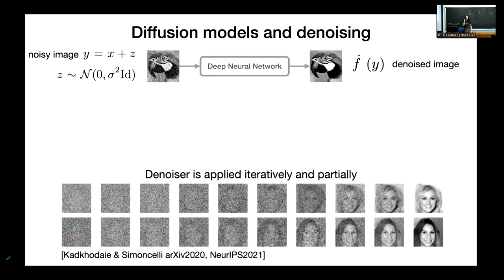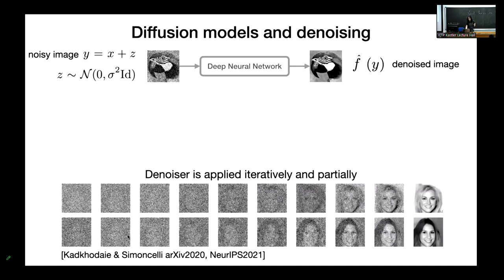I'm going to give you a brief review of diffusion models from a denoiser perspective. Diffusion models are based on denoisers. A deep neural net denoiser takes a noisy image y, which is the sum of a clean image x and z, a sample of Gaussian white noise. The standard deviation of the noise varies in a wide range from 0 to 1. They are trained to remove the noise by minimizing mean square error, returning a denoised image f-hat of y. After the denoiser is learned, it is applied partially and iteratively, starting from a sample of noise to generate an image.